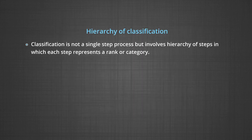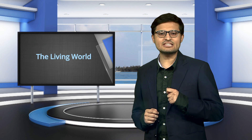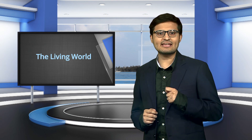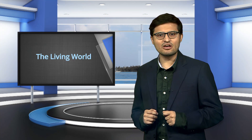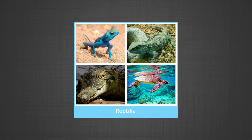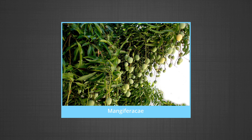The hierarchy of classification. Classification is not a single-step process but involves a hierarchy of steps in which each step represents a rank or category. A taxon is a taxonomic group of real organisms assigned to a category, whereas a taxonomic category represents a rank or level in the hierarchy and does not represent the living organisms itself. For example, Reptilia is a taxon, but class is the category. Similarly, Mangiferaceae is a taxon, but family is the category.